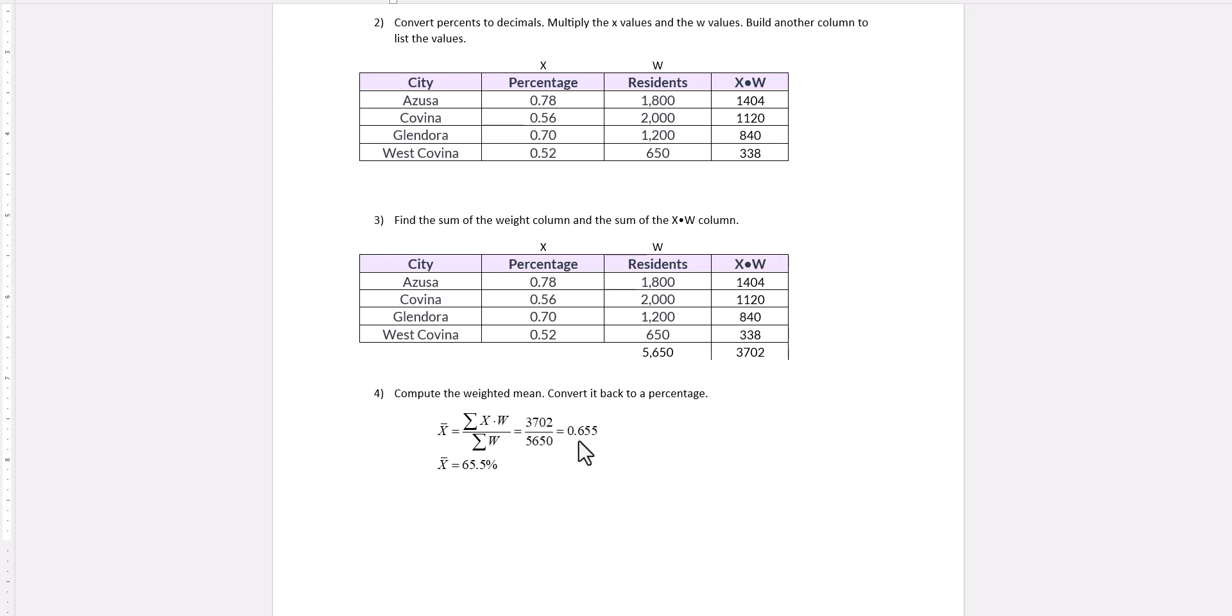I'm rounding to three places. 0.655 is the result. But remember, we want to convert it back to a percentage. To do so, move your decimal two spaces to the right and write in the percent sign.